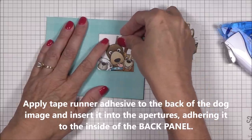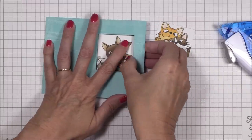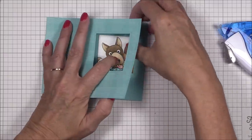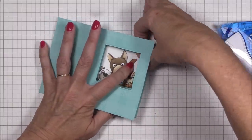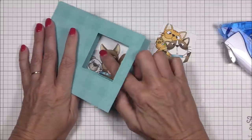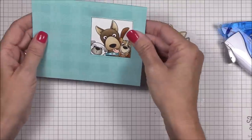Now I've applied tape runner adhesive to the back of the dog image and I'm inserting it into the apertures so that it sticks to the inside of the back panel. It's a tight fit, but if you're patient and precise, you can pull the edges of the inside and front panels away enough to adhere the image.